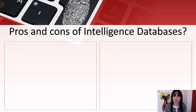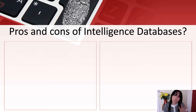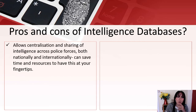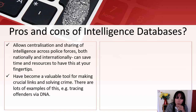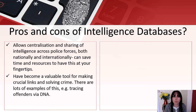Pros and cons of intelligence databases — this is where your marks are in your controlled assessment. The first strength: it allows centralisation and sharing of intelligence across police forces both nationally and internationally, saving time and resources. It's also become a valuable tool for making crucial links and solving crime, such as tracing offenders via DNA — a really valuable tool to help criminal investigations get started and draw upon new information.